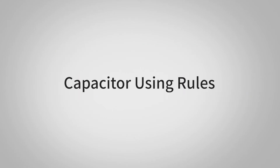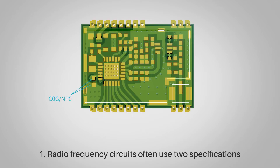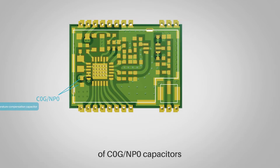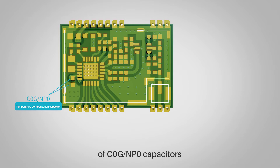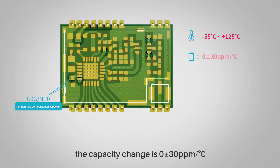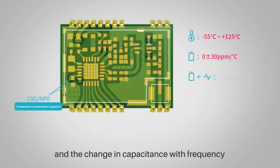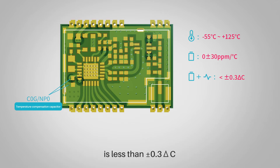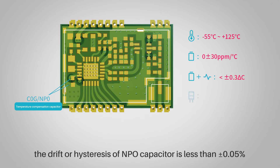Capacitor usage rule one: Radio frequency circuits often use two specifications of C0G/NP0 capacitors, both of which are temperature-compensated capacitors. When the temperature is from -55°C to +125°C, the capacitance change is zero ±30 ppm/°C, and the change in capacitance with frequency is less than ±0.3 ΔC. The drift or hysteresis of NP0 capacitors is less than ±0.05%.